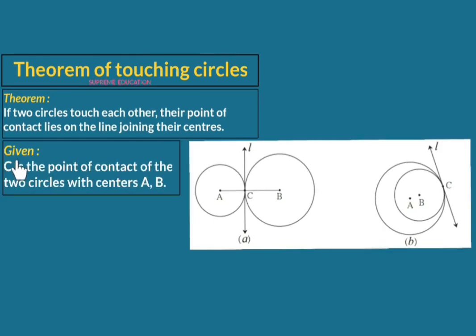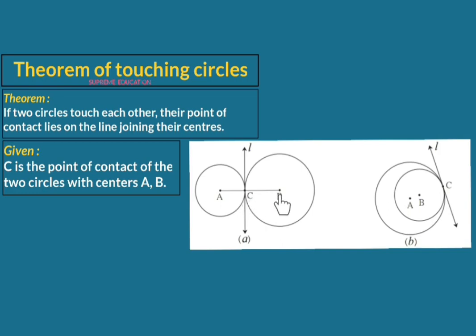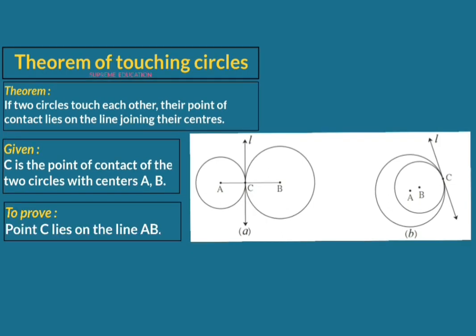Given: C is the point of contact of the two circles with centers A and B. To prove: we need to show that point C lies on line AB — that is, points A, C, and B are collinear. So our goal is to prove that C lies on line AB.